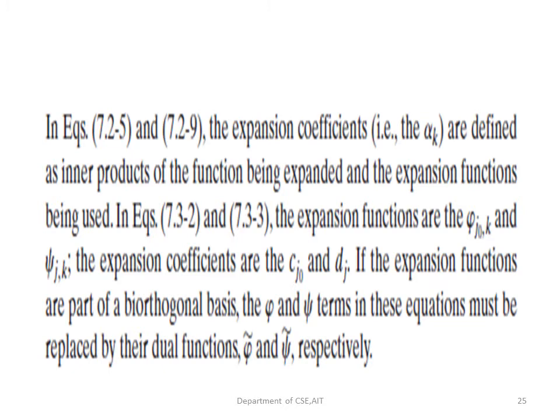The expansion coefficients α_k were defined as the inner product of the function being expanded and the expansion functions. In the present equations, the expansion functions are φ(j₀,k) and ψ(j,k), and the coefficients are c(j₀) and d(j). If the expansion functions form a bi-orthogonal basis, the φ and ψ terms in these equations must be replaced by their dual functions φ̃ and ψ̃ respectively.